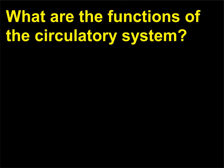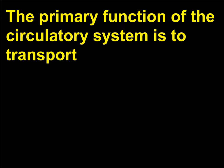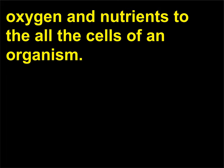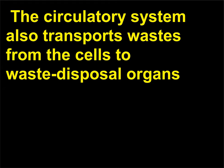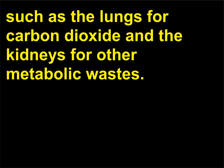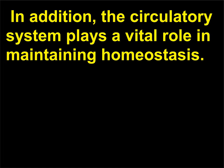What are the functions of the circulatory system? The primary function of the circulatory system is to transport oxygen and nutrients to all the cells of an organism. The circulatory system also transports wastes from the cells to waste disposal organs, such as the lungs for carbon dioxide and the kidneys for other metabolic wastes. In addition, the circulatory system plays a vital role in maintaining homeostasis.